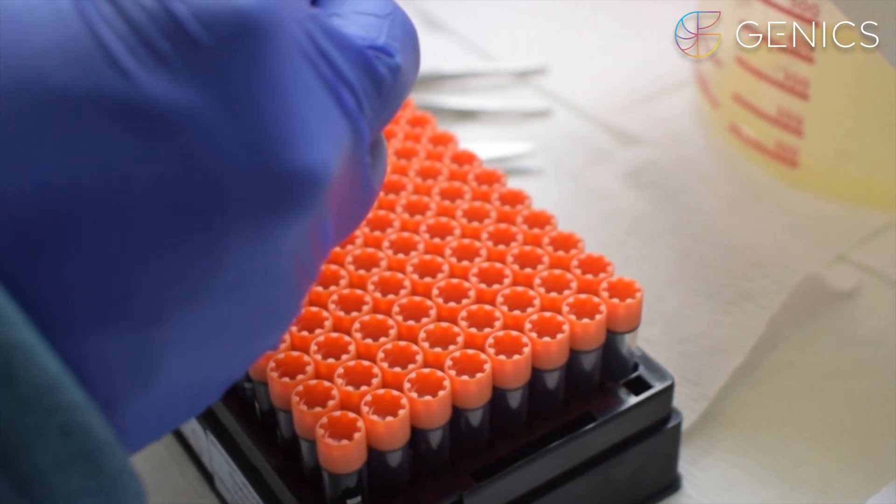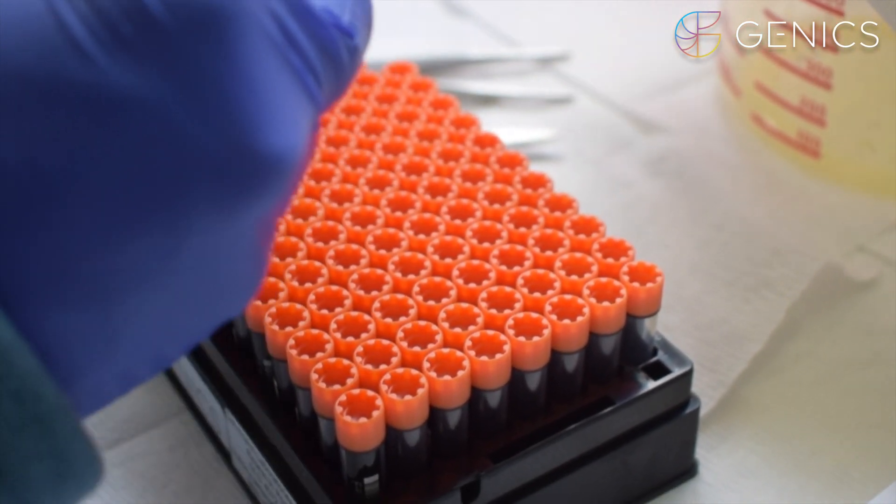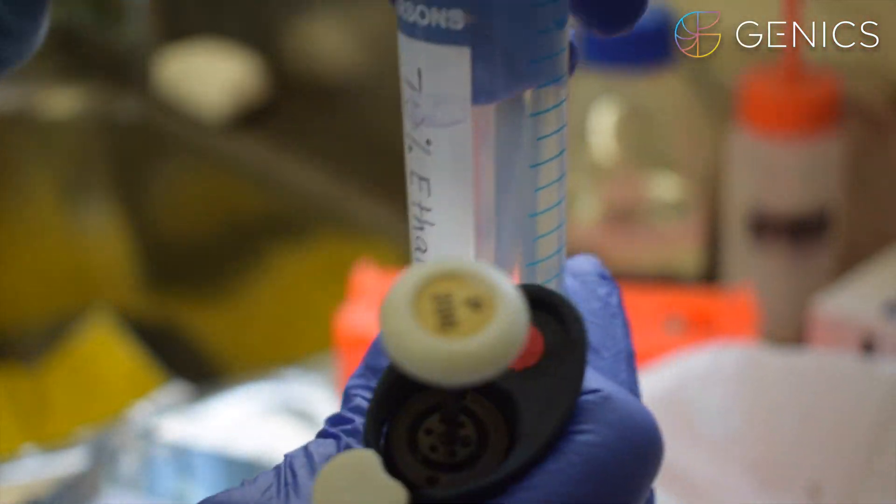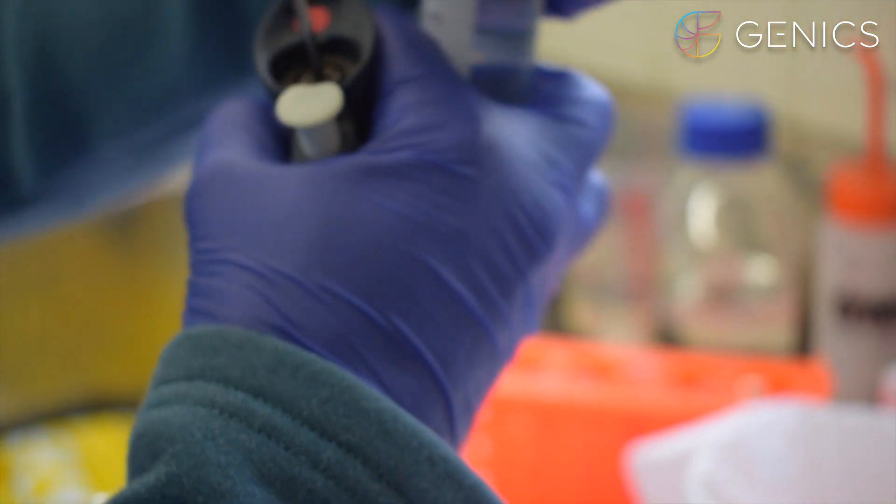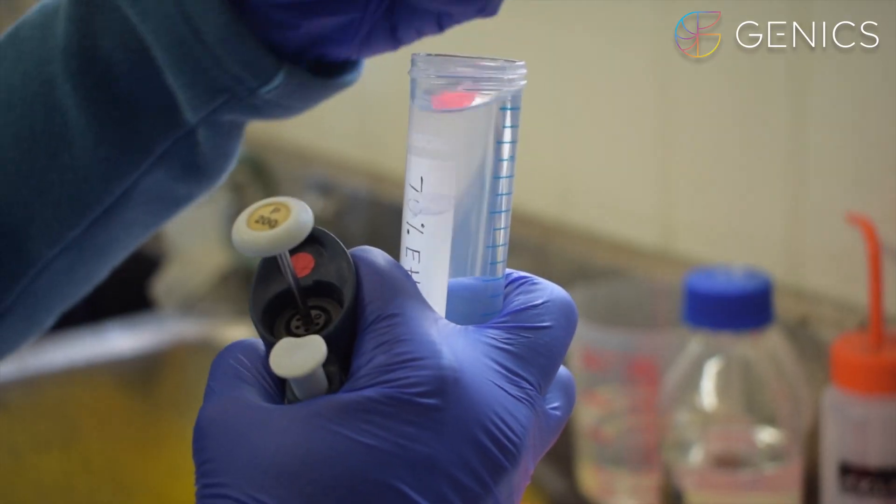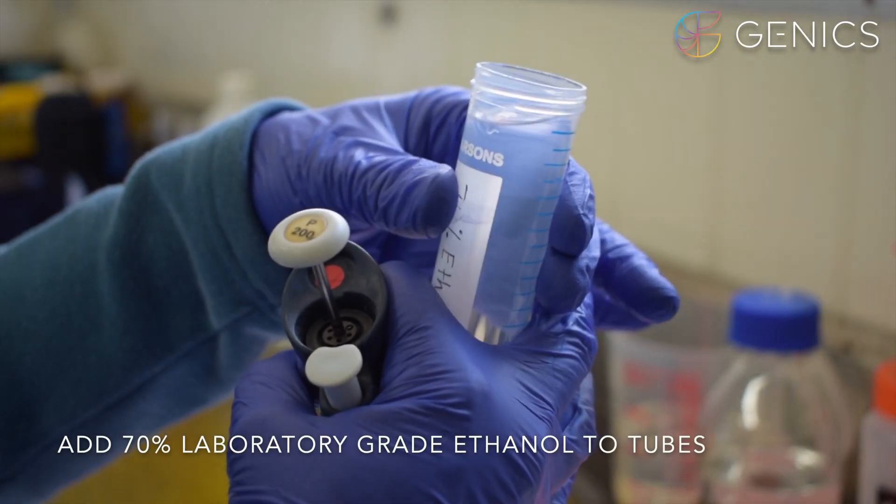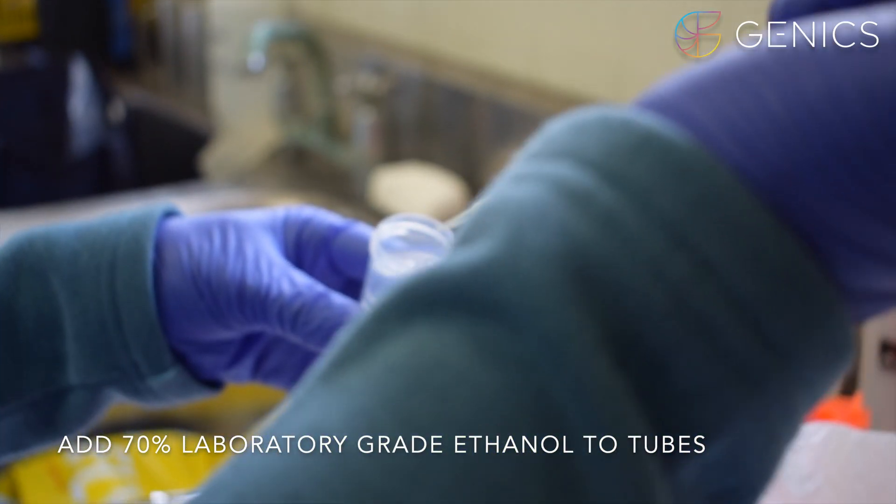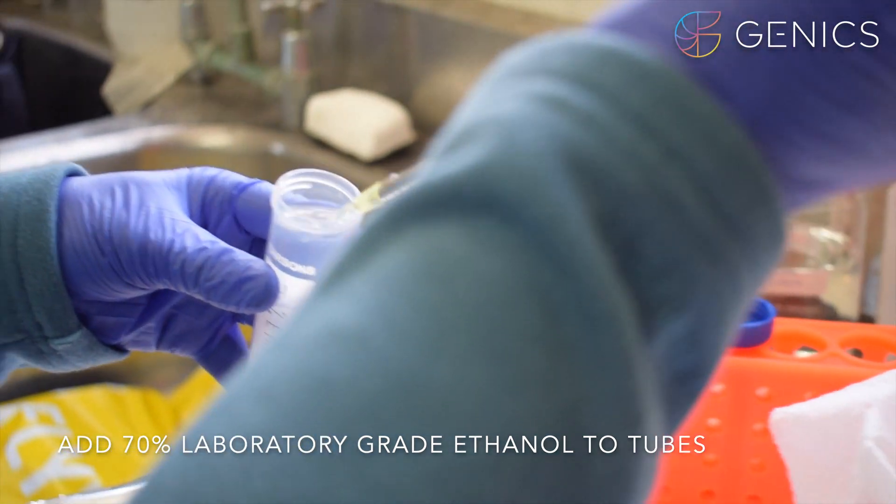You then want to unscrew your orange tube lid and sit it back into the rack. Then you add the 70% laboratory grade ethanol which is your fixative. You can put anything from 600 microliters to 1 ml of ethanol into your tubes.